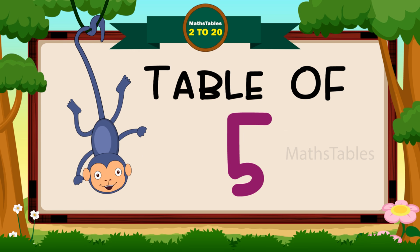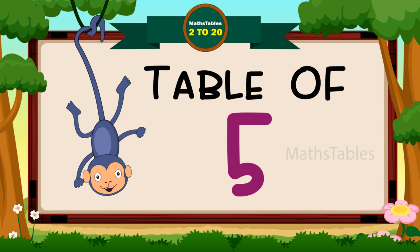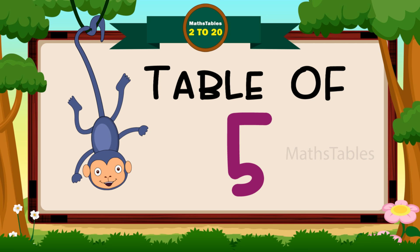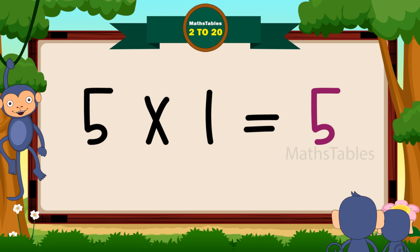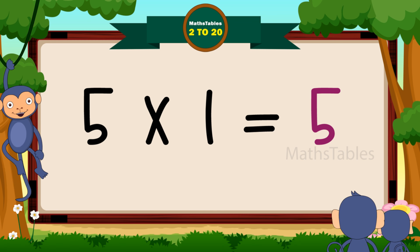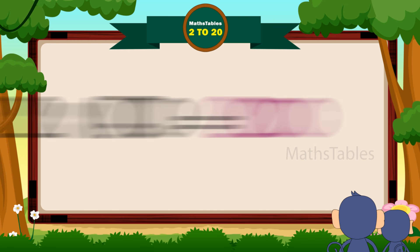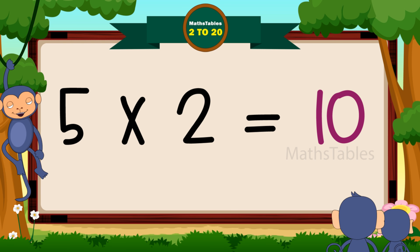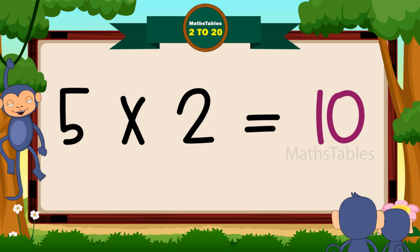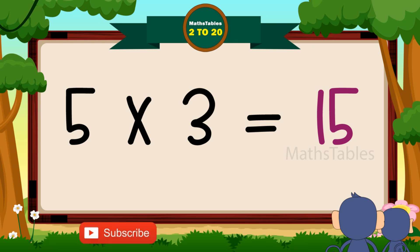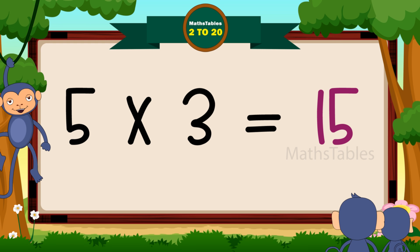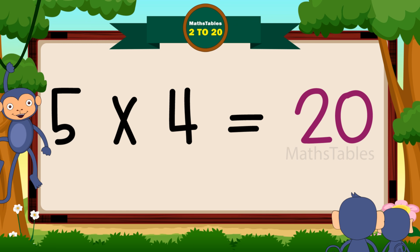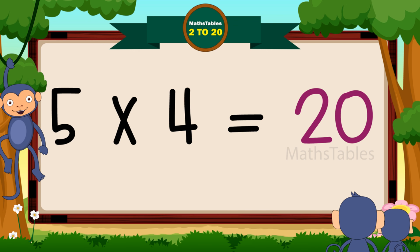Hi friends, now we will learn the table of five. Five ones are five. Five ones are five. Five twos are ten. Five twos are ten. Five threes are fifteen. Five threes are fifteen. Five fours are twenty. Five fours are twenty.